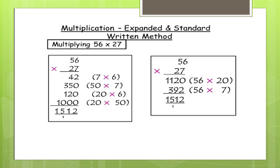Add the answers together. It is 1512. The same answer we get. So 56 multiplied by 27 is 1512.